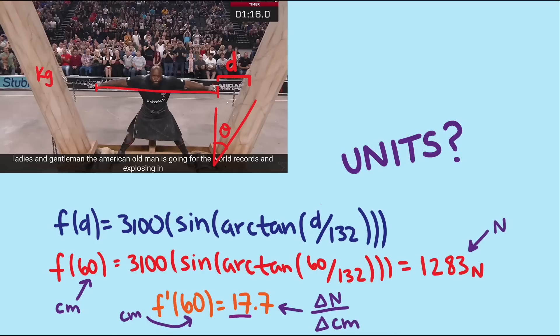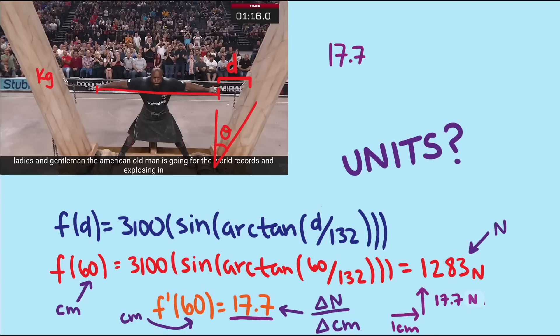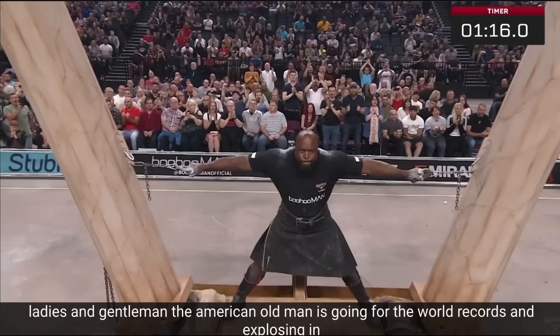The value of the derivative is positive, so our value of 17.7 Newtons per centimeter means that for every increase of 1 centimeter on both sides, the force the athlete feels increases by 17.7 Newtons. 17.7 Newtons per centimeter is about 10 pounds per inch. So if an athlete has longer arms for their height and it puts the pillars out, say 5 centimeters or 2 inches further out on each side, then they have about 35.4 Newtons or 20 pounds more force to fight against.